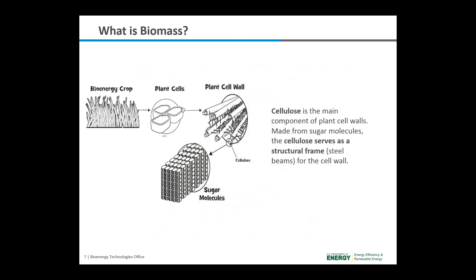One type of sugar created by biomass is called cellulose. Cellulose is the main component of plant cell walls — made from sugar molecules, it can be thought of as the structural frame of the plant cell wall, sort of like the steel beams in a building. Scientists and engineers are using this cellulose to create bioenergy.